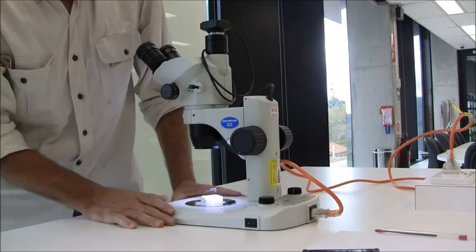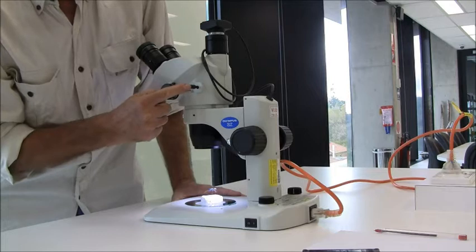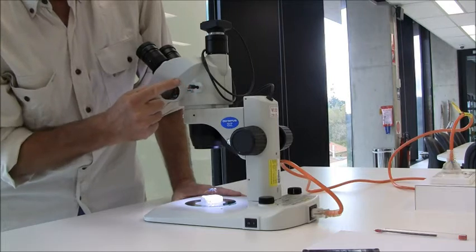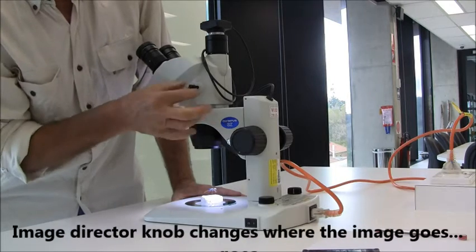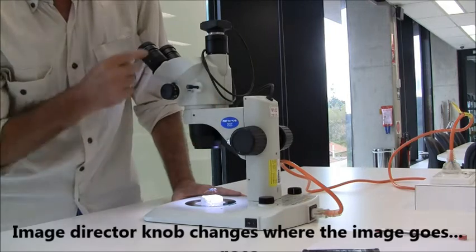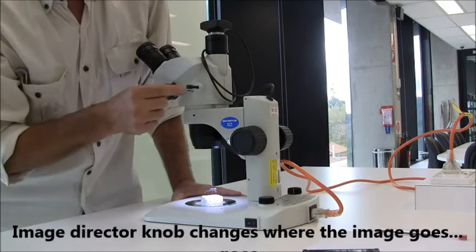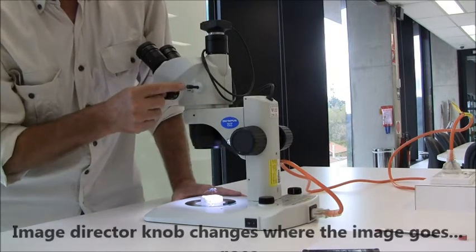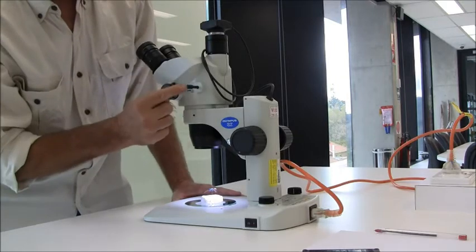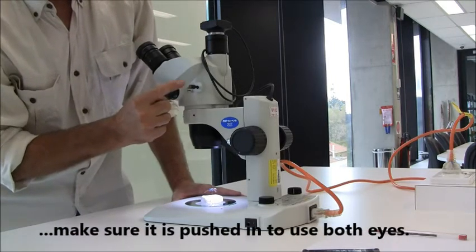The next thing in setting this up is to make sure that this little knob is pushed in. It's pulled out to send the image to the camera and then to your computer. But if you want to use it using both eyes that knob has to be pushed in.